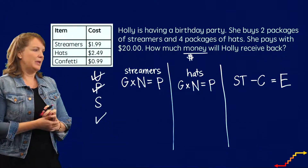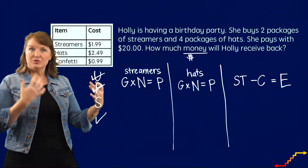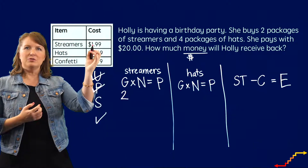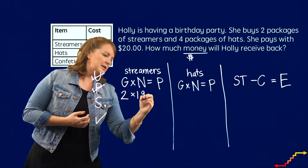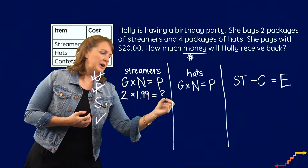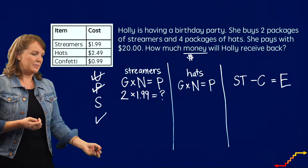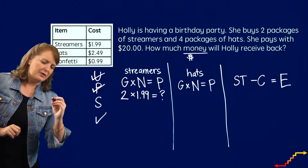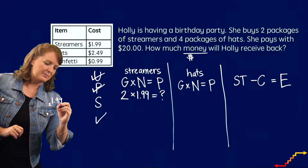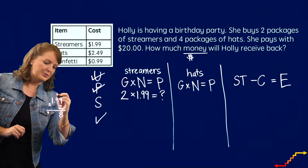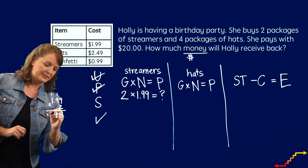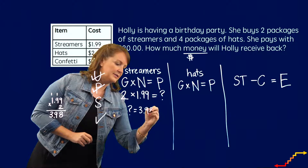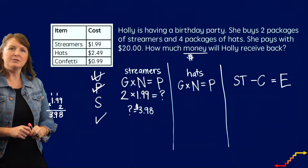Let's go ahead and set up and solve this problem. First, we're going to figure out how much Holly spent on streamers. She bought two packages of streamers, and each costs $1.99. So I'll do $1.99 times two over here in my workspace. She spent $3.98 on the streamers. I'll put my dollar sign there so I always remember I'm talking about dollars.